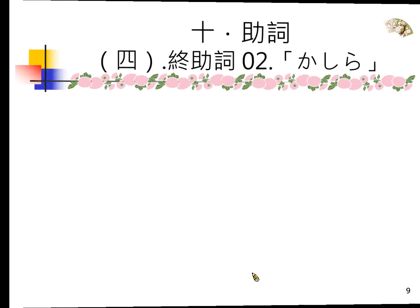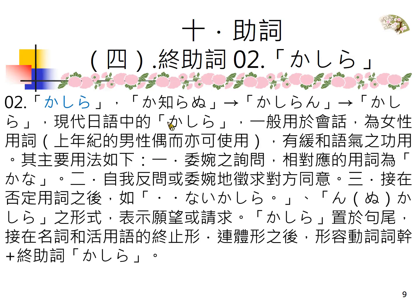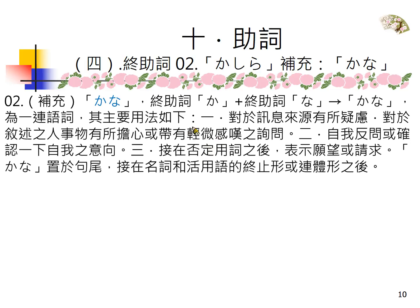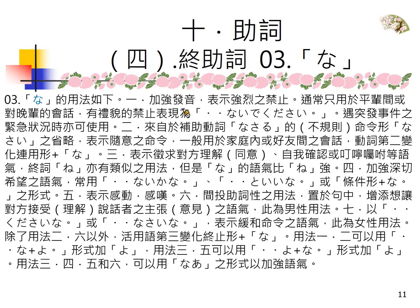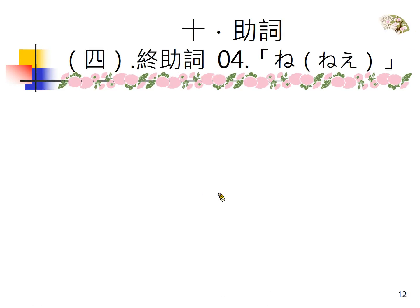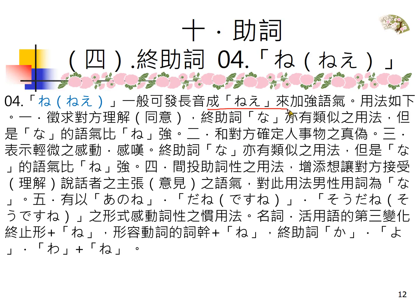今天不再赘述の，の是女孩子在用的，男孩子很少用，而且上了年纪的男孩子偶尔可以看得到。它有缓和语气的功用，表委婉的询问，也是问句在用。男孩子有时候可以用かな来代替の，因为男孩子不用の了。な发重音的时候表强烈的禁止，如「動くな！」希望同学把那个例子记起来就比较不会用错。